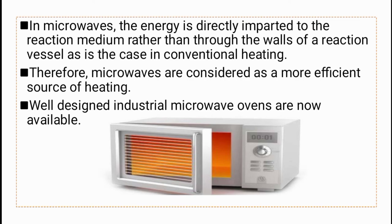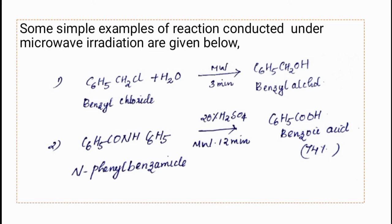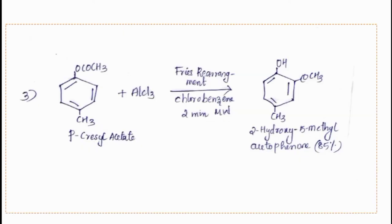Well-designed industrial microwave ovens are available now. Some simple examples of reactions conducted under microwave irradiation include: conversion of benzyl chloride to benzyl alcohol under microwave irradiation for 3 minutes, and conversion of N-phenylbenzamide to benzoic acid in the presence of 20% H₂SO₄ under microwave irradiation for 12 minutes.